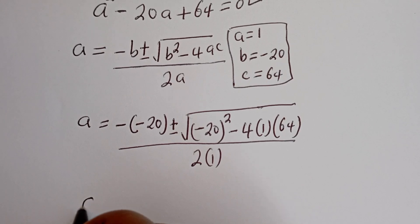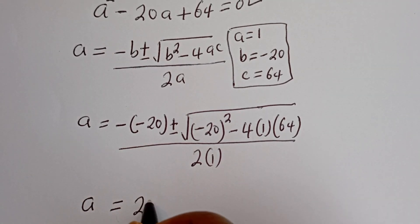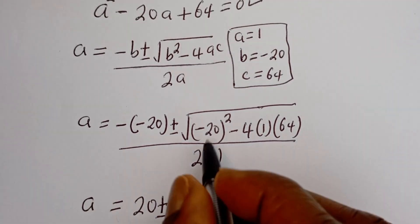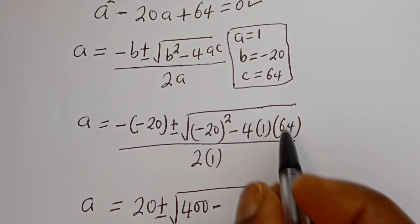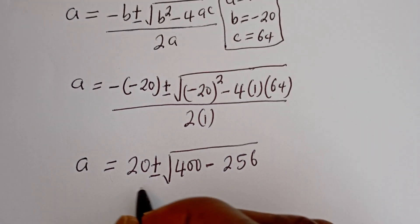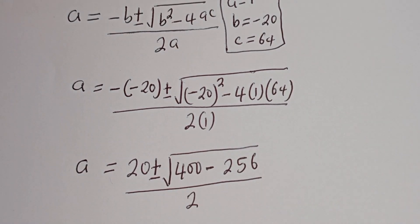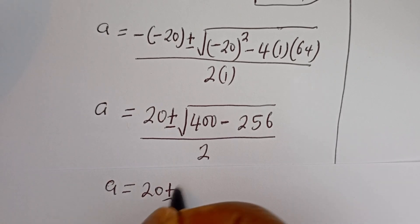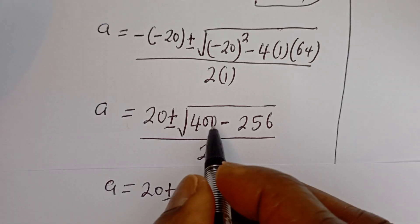a is equal to: minus times minus 20, which is 20, plus or minus square root of 400 minus 4 multiplied by 1 multiplied by 64, which is 256, then divided by 2 multiplied by 1, which is 2. This gives us a is equal to 20 plus or minus square root of 144, divided by 2.